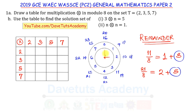Since 4 is within our range 0–7, we write 4. Similarly, 2 × 3 = 6, also less than 8, so we write 6. For 2 × 5 = 10: 10 ÷ 8 = 1 remainder 2, so we enter 2. For 2 × 7 = 14: 14 ÷ 8 = 1 remainder 6, so we enter 6.